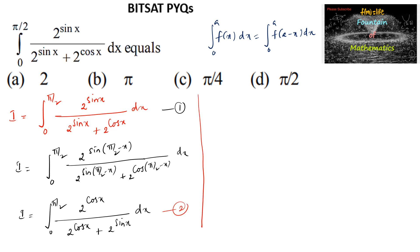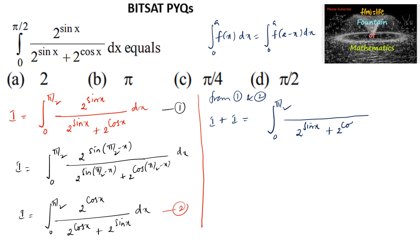Now adding equation 1 and equation 2: I plus I equals the integral from 0 to π/2 with both integrals having the same limits. The denominators are both (2^(sin x) plus 2^(cos x)), and the numerators also add up to (2^(sin x) plus 2^(cos x)), so numerator and denominator cancel.